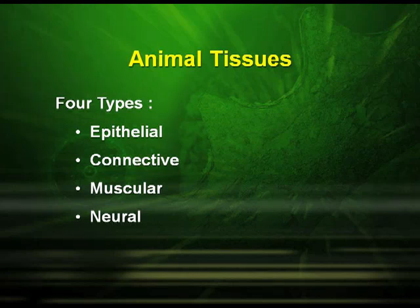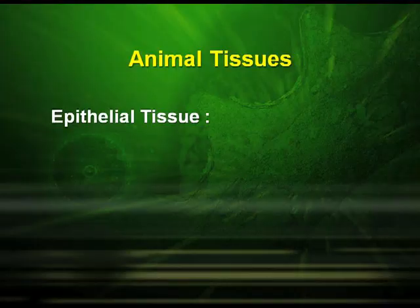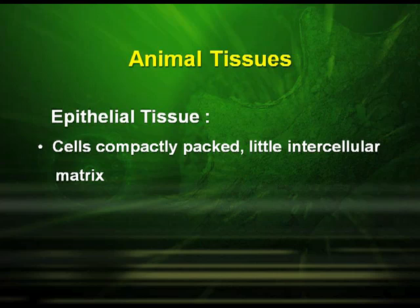In animals there are mainly four types of tissues: the epithelial tissues, the connective tissues, the muscular tissues, and the neural tissues. Epithelial tissue is generally found in our skin, and the cells here are compactly packed with little intercellular matrix.